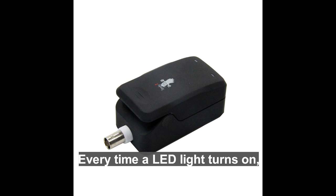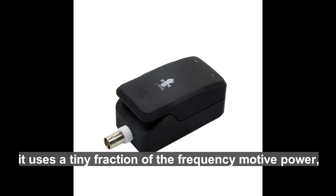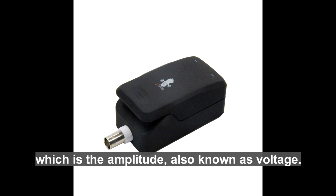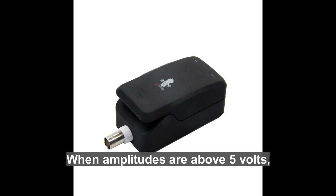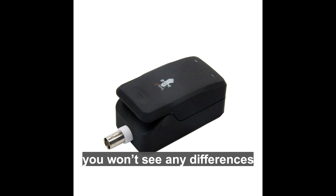Every time a LED light turns on, it uses a tiny fraction of the frequency's motive power, which is the amplitude, also known as voltage. When amplitude is above 5 volts, you won't see any differences in the luminescence of the LED lights.